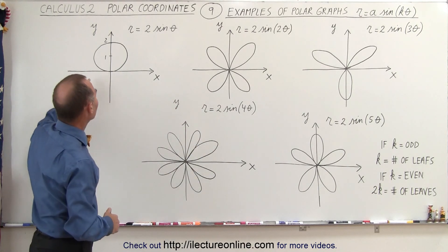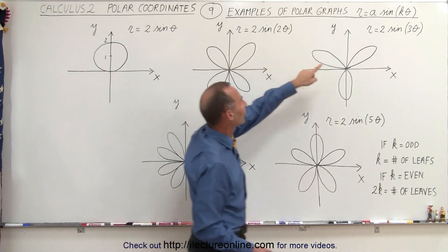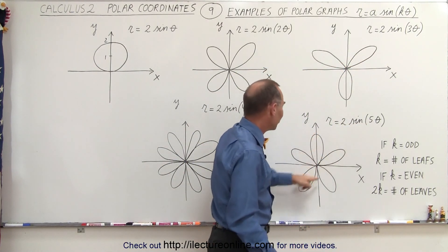Secondly, notice when you have the sine of theta, there's only one leaf. When you have the sine of 3 theta, there's 3 leaves. When you have the sine of 5 theta, there's 5 leaves.